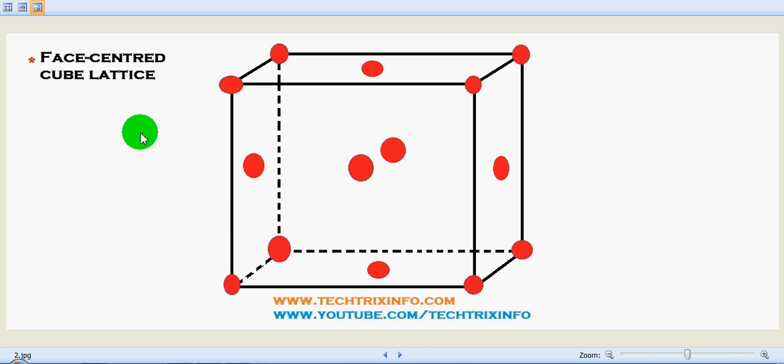Now let's see a face centered cube lattice. In this the atoms at each corner of the cube are also there. And additional atoms at the center of each of the faces. So there is an atom at the center of the face compared to the body centered. So that's the difference that it makes.